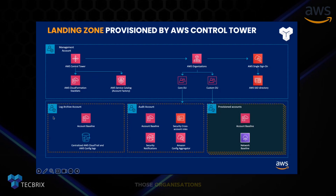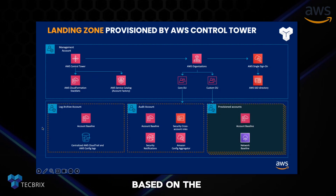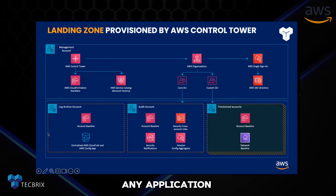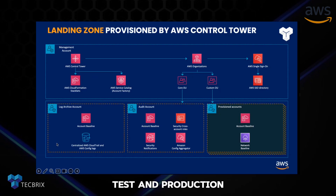And under those organizations, you can have nested organization units as well, where you can segregate your environment based on the applications. Let's say any Application A, and under that application you want to have three different accounts for staging, dev/test, and production — you can have that.